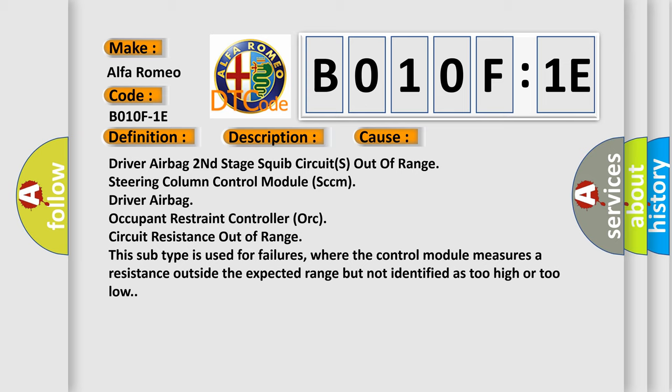Driver airbag second stage squib circuits out of range, steering column control module SCCM, driver airbag, occupant restraint controller ORC circuit resistance out of range. This subtype is used for failures where the control module measures a resistance outside the expected range but not identified as too high or too low.